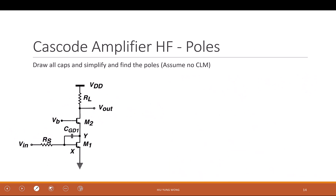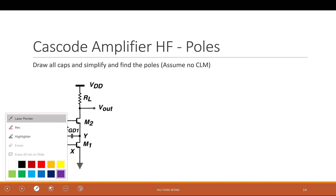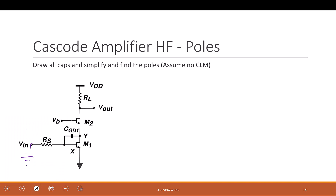Let's do the final exercise before I go to review the midterm solution. We want to find the poles and also the capacitors. Let's repeat the procedure: ground all independent sources — ground the AC source too, since it's also an independent source.